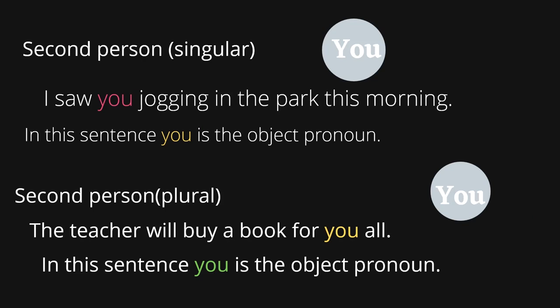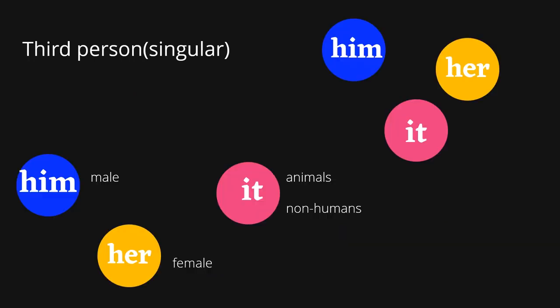Second person singular would be 'you,' and it remains the same for the plural. 'I saw you jogging in the park this morning.' 'The teacher will buy a book for you all.' Third person singular would be him, her, it. We use 'him' to refer to males, 'her' to refer to females, and 'it' to refer to animals and non-humans.